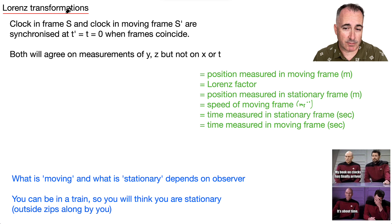Okay, so let's look at these actual Lorentz transformations. I put this one here from Star Trek, the next generation. My book on clocks finally arrived. It's about time. That's because you've got clocks and times here. So this one here, we have a clock in frame S and we have a clock that's in the moving frame S primed. And those are synchronized. So when T primed equals T equals zero, that's when those two frames are actually coinciding. But then things happen. Now people in both those different frames, they'll agree on the measurements of Y and Z. So we think about three dimensions, but they won't agree on X or T. Those will be different. So the first equation from your data booklet goes like this.